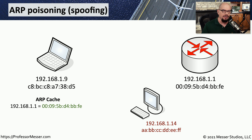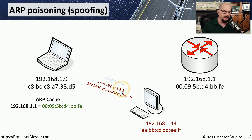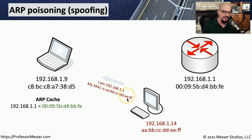But an enterprising attacker can also take advantage of this. Let's say that we have an attacker on this network at 192.168.1.14, with a MAC address of AABBCC-DDEEFF. If this attacker would like to get into the middle of this conversation, it can simply pretend to be the router. So the attacker will send out an unsolicited ARP response that says, I am 192.168.1.1 — which normally would be associated with the router — and my MAC address is the MAC address associated with the attacker's device, AABBCC-DDEEFF.